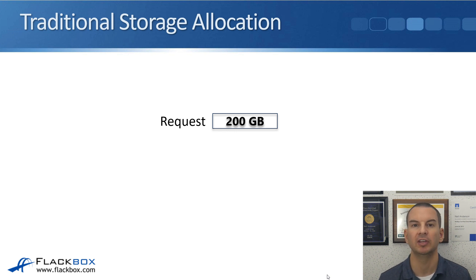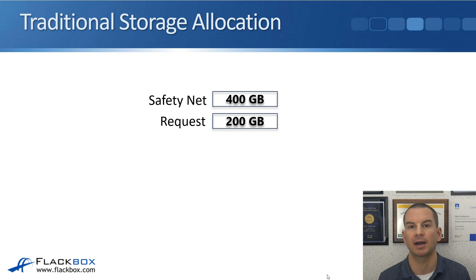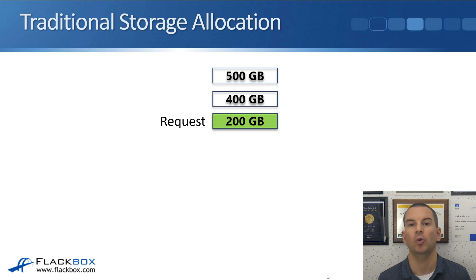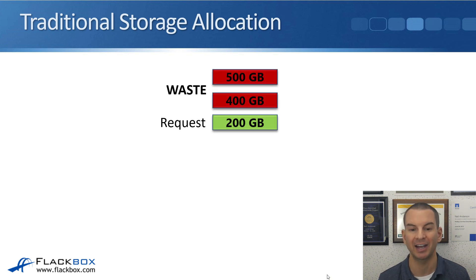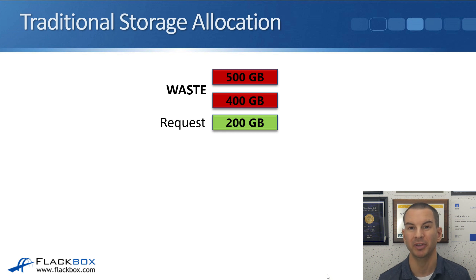But you've dealt with this server team before and you know that they commonly underestimate the required storage. So you're going to put in some overhead just in case and you're going to purchase 400 gigabytes worth of storage for this server. But the problem is that you can't buy 400 gigabyte hard drives, so you end up buying a 500 gigabyte hard drive. The request was 200 gigabytes, but you've ended up paying for 500 gigabytes — meaning 300 gigabytes of actual physical hardware is being wasted.